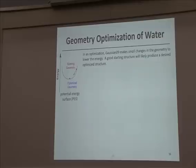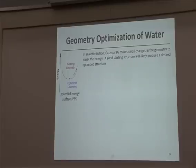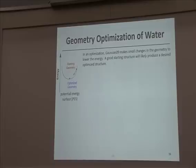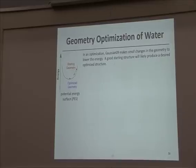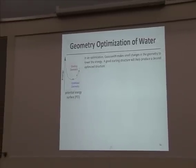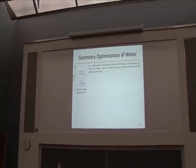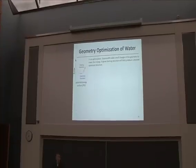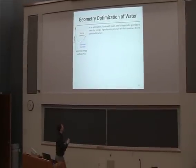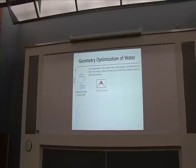We're going to talk a little more about what geometry optimization means. To optimize the structure, you need to create an input structure, and the quality of that input structure is really important. WebMO will submit that structure with the appropriate input files to Gaussian, which will actually do the calculation. Gaussian 09 is going to attempt to take whatever starting geometry you put in and turn it into a good optimized geometry by making small changes to the interatomic or bonding distances, angles, and dihedral angles. If it makes a change that stabilizes the structure, it keeps that change and continues until any further changes don't stabilize the structure — that's what we call an optimized geometry.